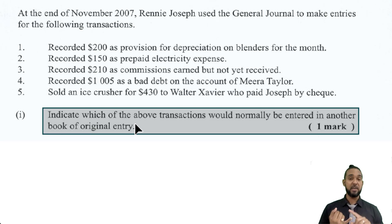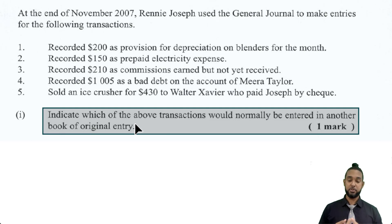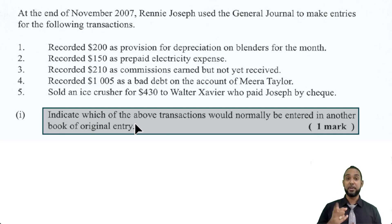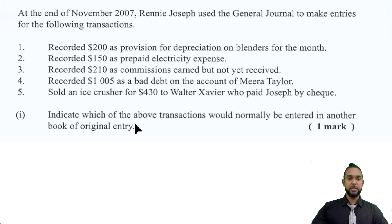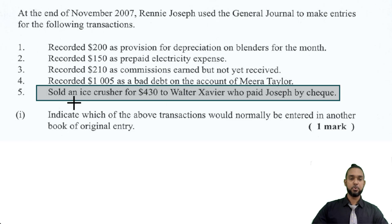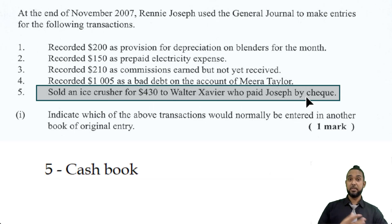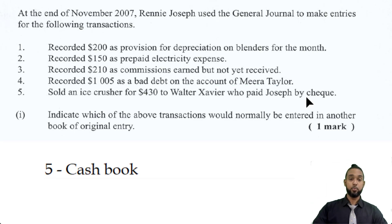So Rennie used the general journal to record those items. The other books of original entry are: the sales journal which records only credit sales; the purchases journal which records only credit purchases of stock; the returns inward/outward journals for stock only; the cash book which records all cash and bank transactions; and the general journal which records everything else. So the item that would go in another book would be transaction five — we sold an ice crusher for $430 to Walter Xavier who paid by check. Once Rennie Joseph received the check, we debit the cash book and enter the information under the bank column.